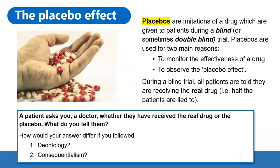In terms of deontology, if a patient asked you whether they'd received the real drug or the placebo, you would have to tell them the truth. Lying is morally wrong according to the universal moral code, and therefore you should not tell a patient they've received a real drug when in fact they have a placebo. Whereas if you were following consequentialism, telling the truth would interfere with the experiment and the result, and therefore it wouldn't be good — it could disrupt the trial and prevent finding out whether the drug is effective.